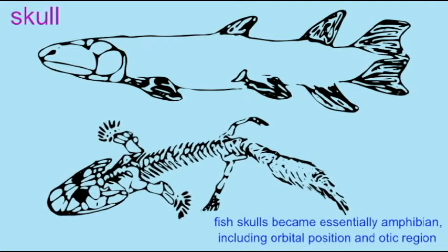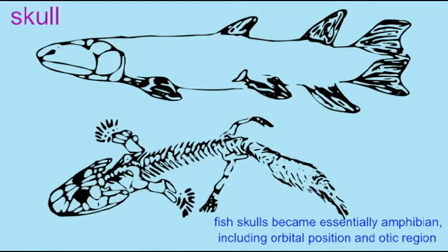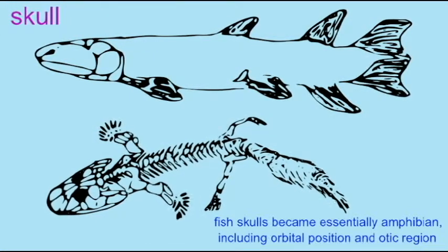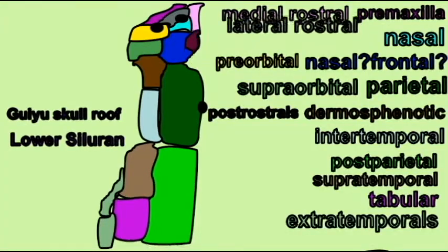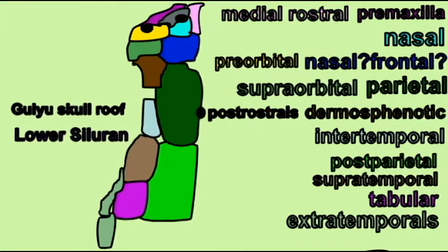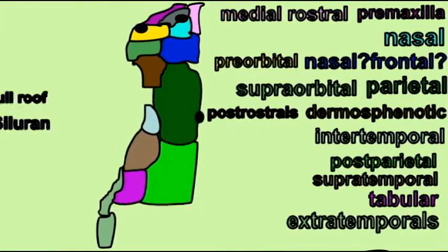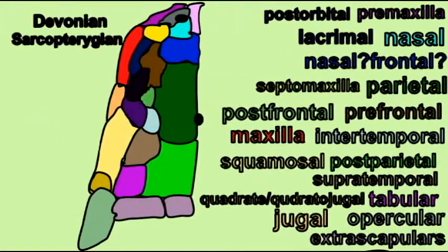In the Devonian there were Sarcopterygian fish whose skulls were more similar to the early amphibians than they are to any fish alive today. And the skulls of the first amphibians were more similar to the Sarcopterygian fish than they are to any amphibian alive today.